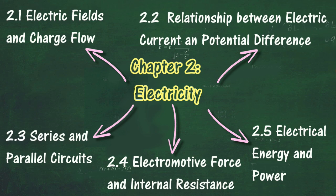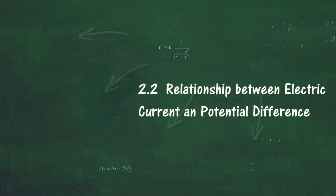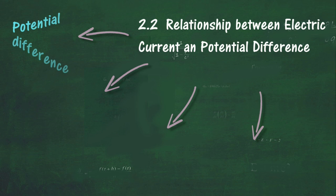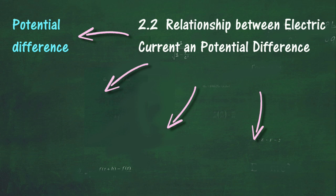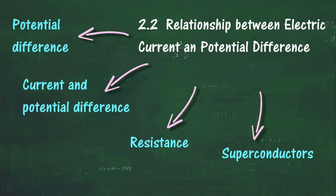In Section 2.2, we will learn about the relationship between electric current and potential difference. At the end of this section, you should be able to define potential difference, plan and conduct an experiment, define and describe the relationship between current and potential difference, state Ohm's Law, define resistance, explain factors that affect resistance, solve problems involving potential difference, current and resistance, and describe superconductors.